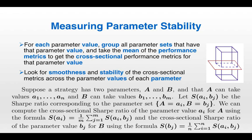Mathematically, suppose the strategy has two parameters, a and b — you can generalize to any number of parameters. Let a take values a1 to an, b take values b1 to bm, and let S(ai, bj) be the Sharpe ratio corresponding to the parameter set a equals ai, b equals bj. We compute the cross-sectional Sharpe ratio of parameter value ai for a using: S(ai) equals 1 over m times the sum from j equals 1 to m of S(ai, bj). You compute the cross-sectional Sharpe ratio for bj similarly, summing over values of a instead of b. The big picture is to reduce the dimensionality so you can check for smoothness and stability of the cross-sectional metrics, giving you an indication of whether the strategy is overfit.